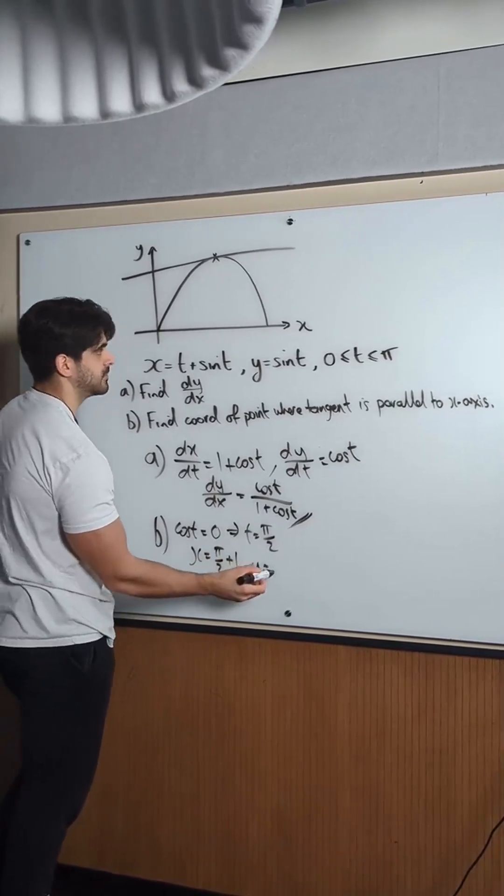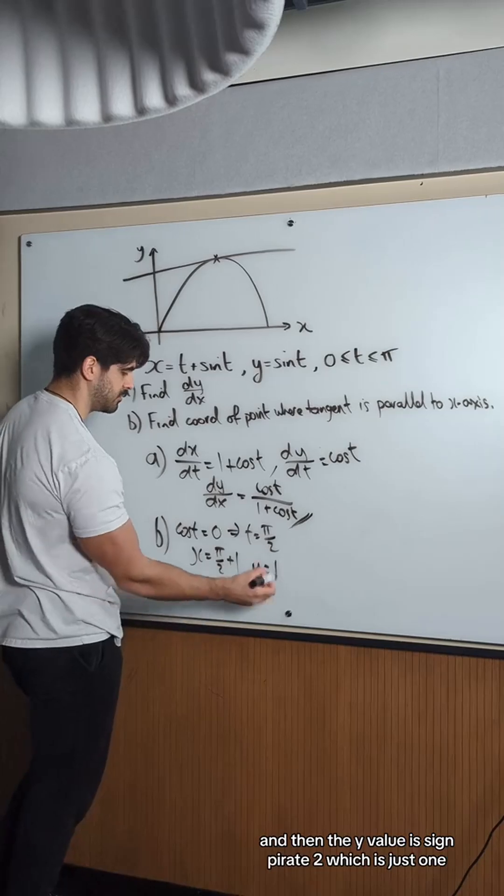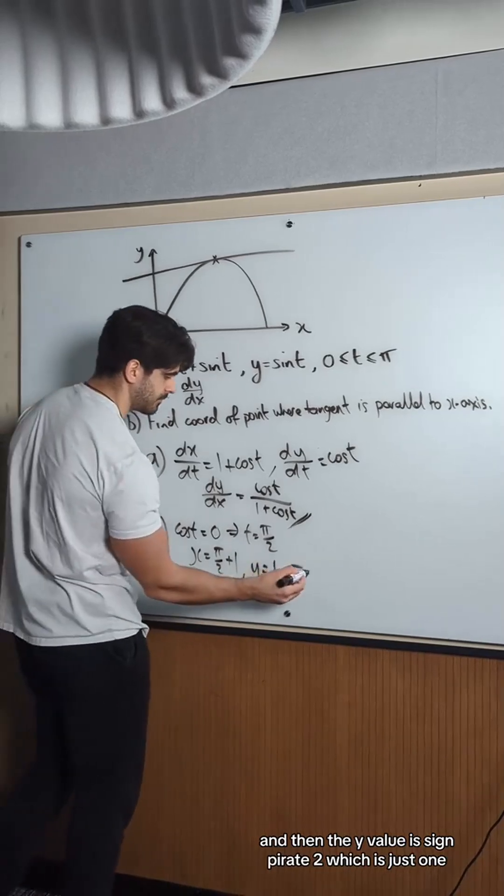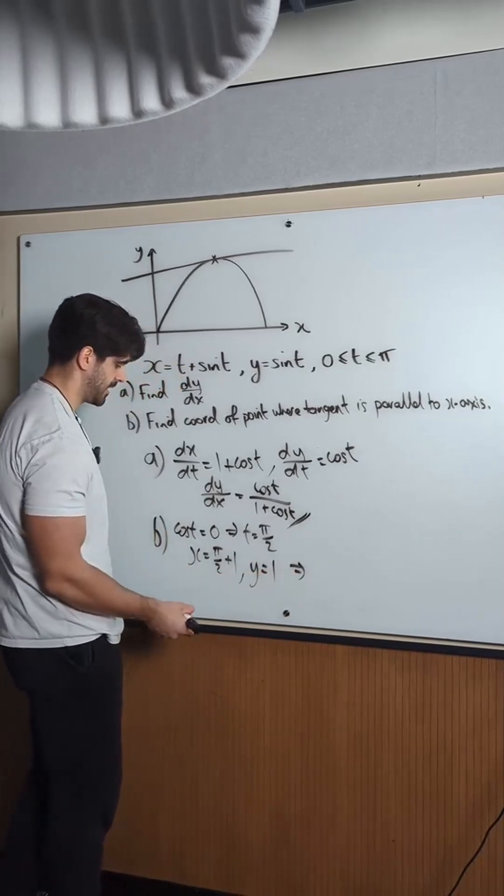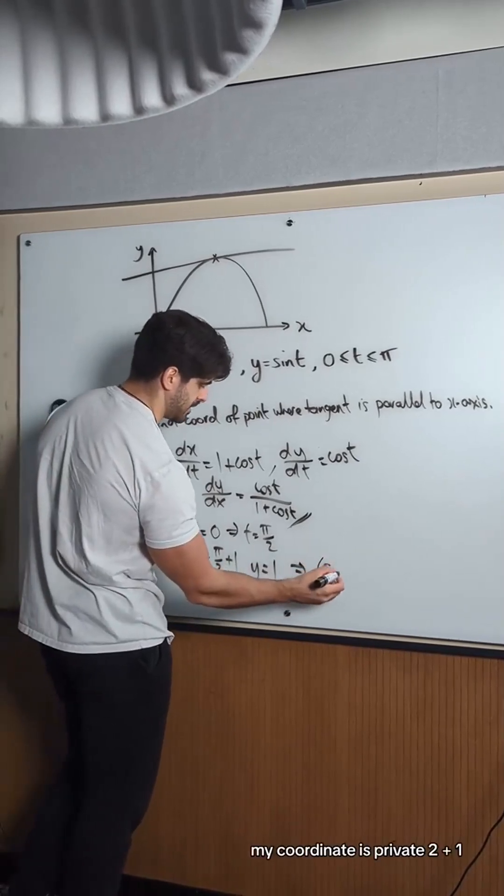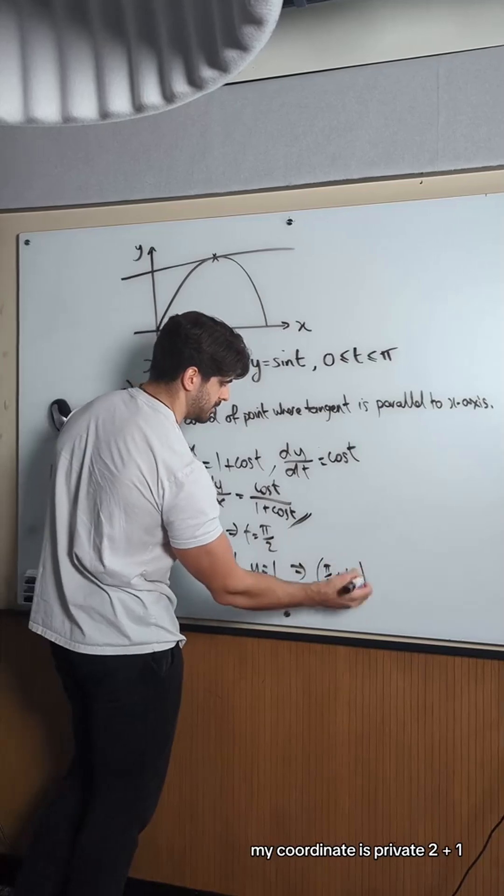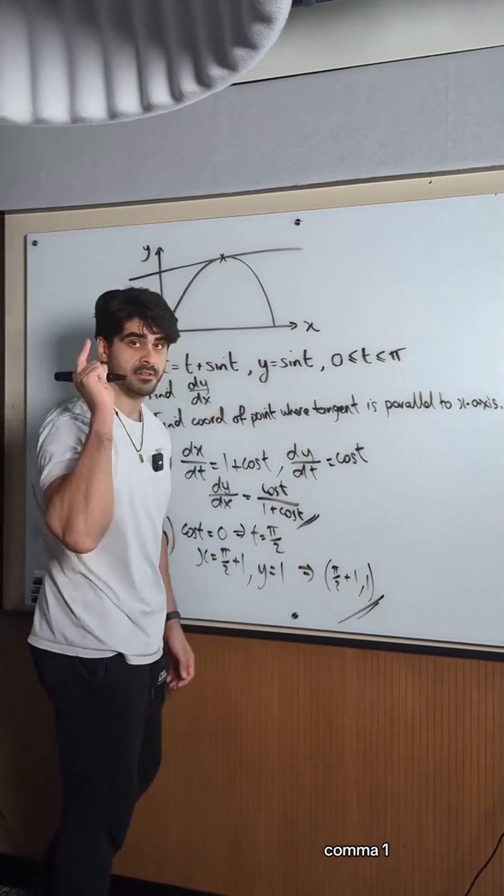And then the y value is sin pi over 2, which is just 1. So my coordinate is pi over 2 plus 1 comma 1. Nice.